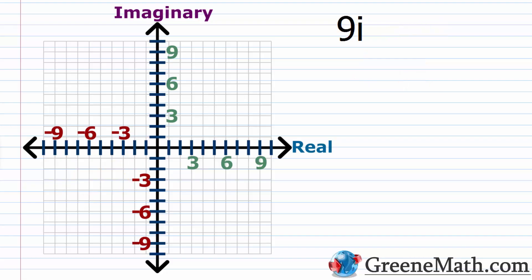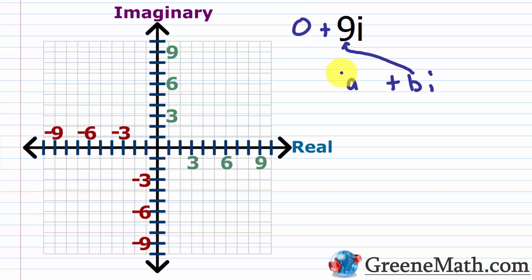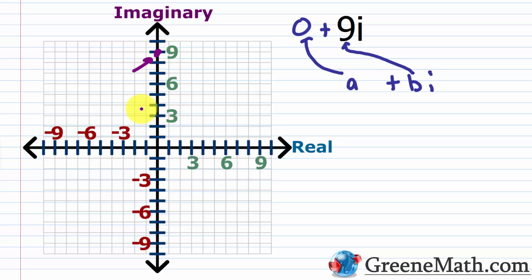What about something like 9i? Using the same technique, we write it as 0 plus 9i, so my a is 0 and my b is 9. On the real axis I don't move at all; I just travel 9 units up on the imaginary axis and place my point there.